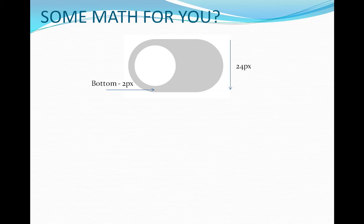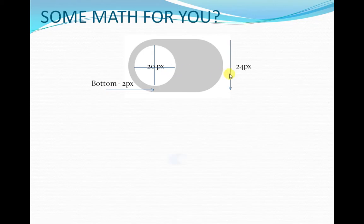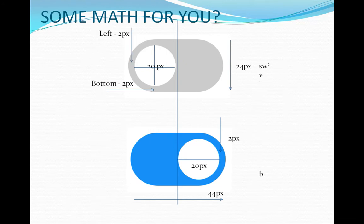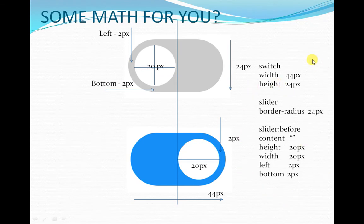Now here is some math for you to do yourself. Say I have a height of 24 pixels and the bottom is 2 pixels. Can you guess what the diameter of the circular button would be? The diameter would be 20 pixels because at the top we have 2 pixels, so 2 plus 2 is 4, and 20 plus 4 is 24 pixels. If I want to move it by 20 pixels, the width is going to be 44 pixels, leaving 2 pixels on the right and 2 pixels on the left. This is how you can create a different kind of switch with different width and height.